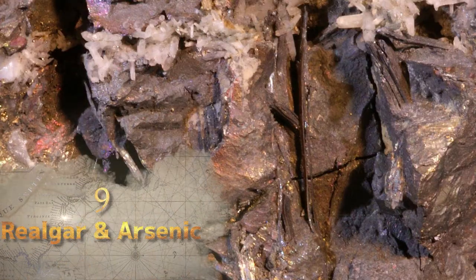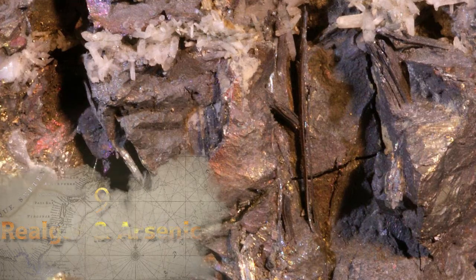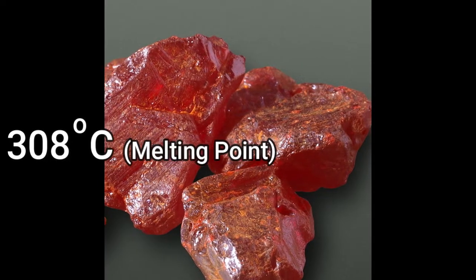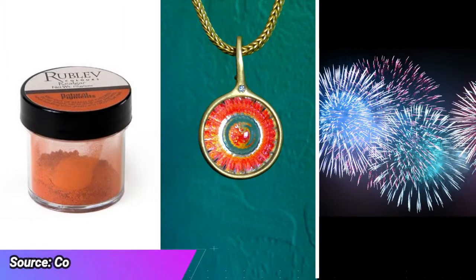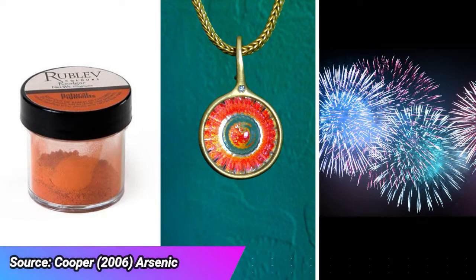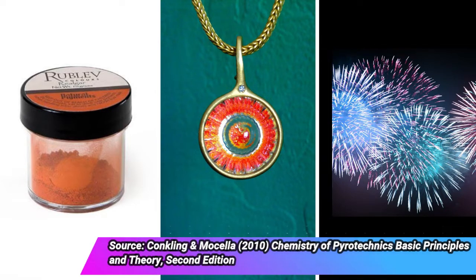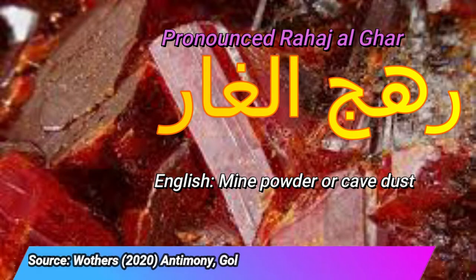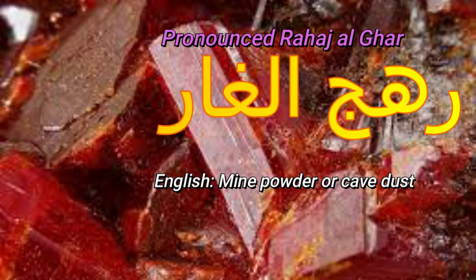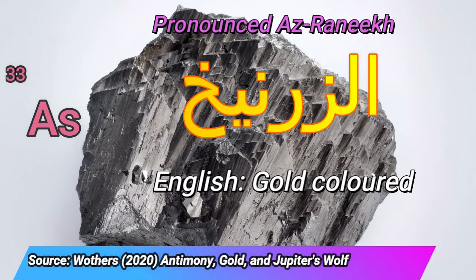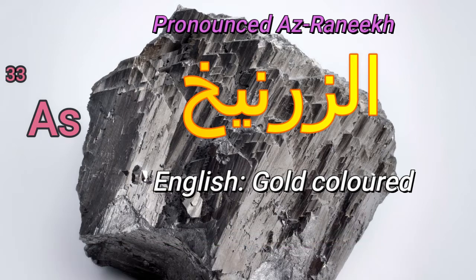Back to elements and minerals: realgar and arsenic. Realgar is an arsenic mineral with a melting point of around 308 degrees Celsius. It has been used to make red paint or dye and used for decor. It has also been used to create fireworks, although such fireworks are restricted for purchase in the United States of America, according to Morsella and Conkling. This word comes from the Arabic Rahaj al-Ghar, meaning 'mine powder' or 'cave dust.' Arsenic is a chemical element with the symbol As on the periodic table. It comes from the Arabic term Azranikh, meaning 'gold-coloured.'